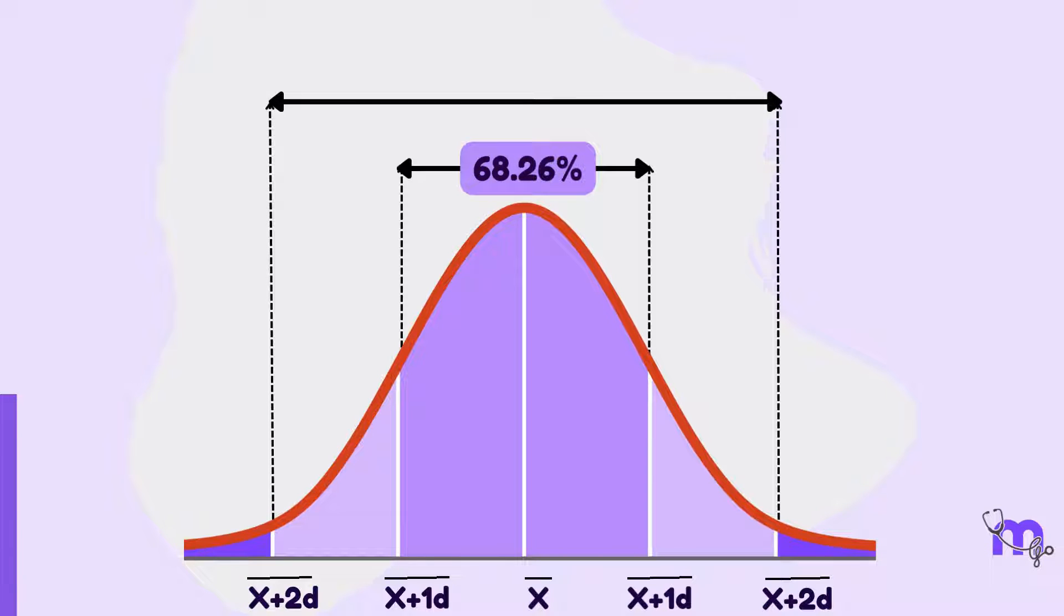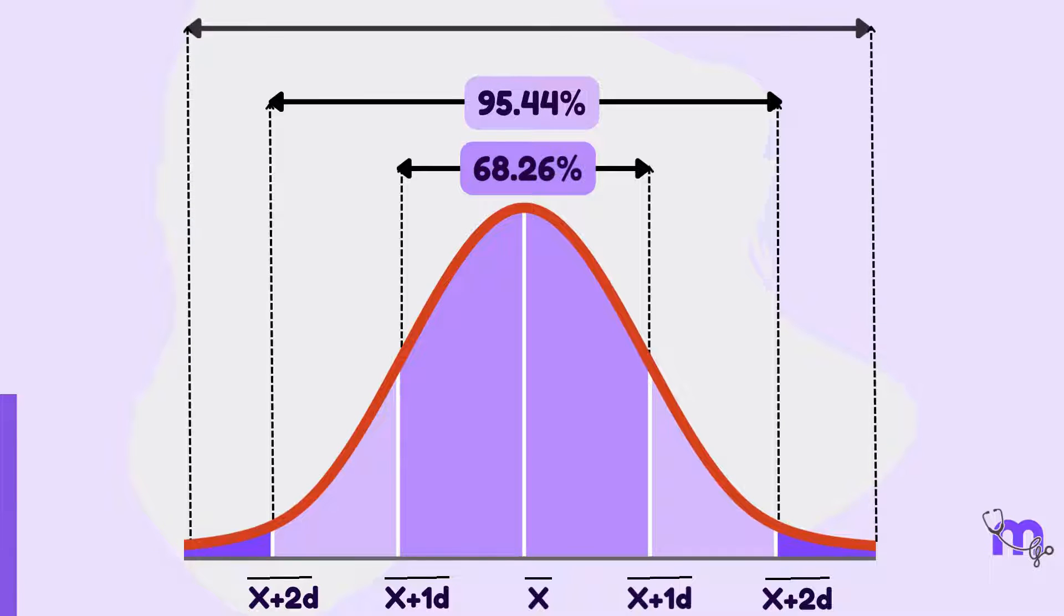The area between two standard deviations on either side of the mean will include approximately 95% of the values, and three standard deviations will include approximately 99.7% of the values.